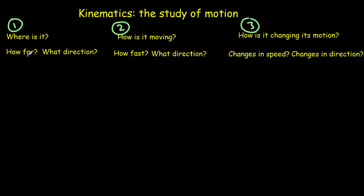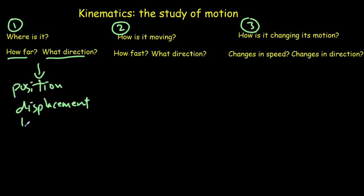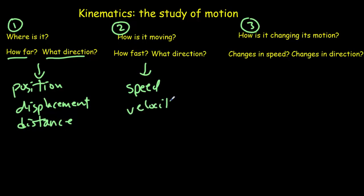If we're going to describe where it is, we need to know how far away and in what direction. The three basic concepts we need to understand here will be position, displacement, and distance. If we want to describe how fast it's moving and in what direction, we need to talk about speed and velocity.